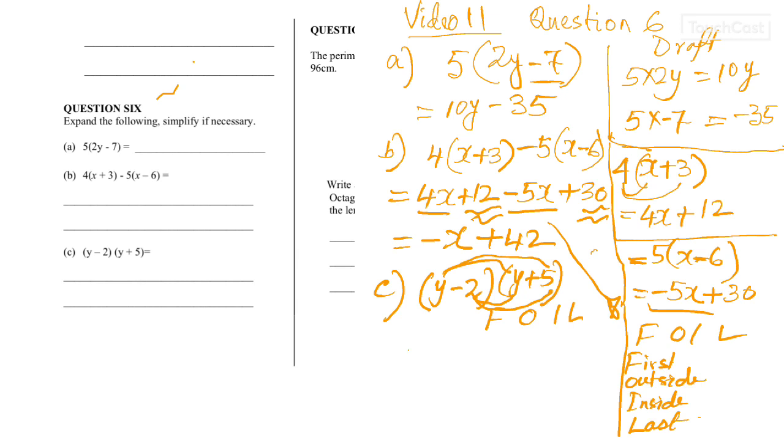So, if I go for removing the brackets, double brackets. That will be, first one will be y squared. Outside one will be 5y. Inside one will be negative 2y. And the last one will be negative 2 and positive 5, negative 10.